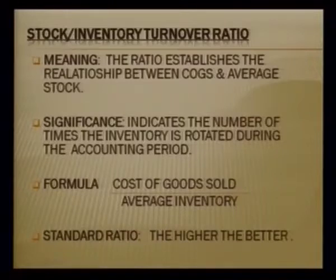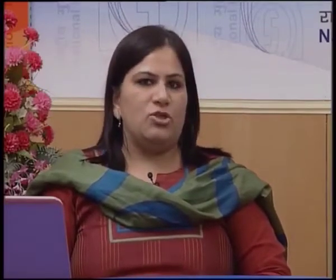The formula to compute the stock or inventory turnover ratio is cost of goods sold divided by average inventory. There is no standard ratio to benchmark against, but higher is better — the more the cycle rotates, the better for the firm's profitability. The two components are cost of goods sold and average stock.